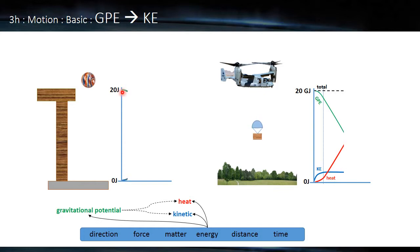So the GPE goes down and the KE goes up. There'll be a moment when they'll cross each other. And the situation reverses when it bounces back up.